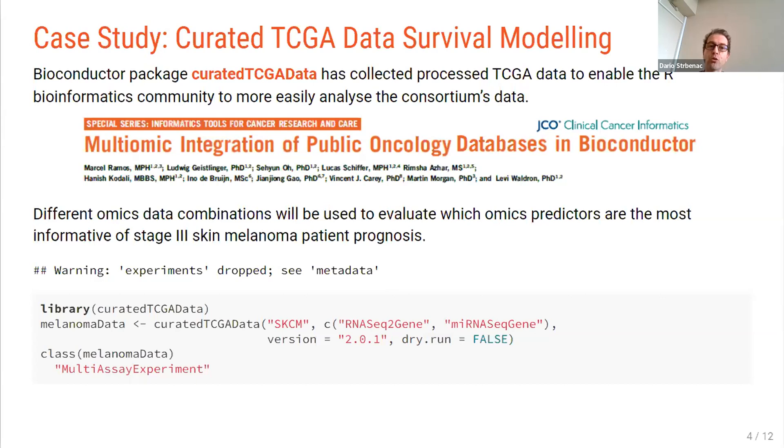So to give you a case study of the new ClassifyR, we're going to apply it to some data from curated TCGA data. So this Bioconductor package has collected the processed TCGA data to help enable the bioinformatics community to more easily analyze this consortium's data. And they published their work in JCO Clinical Cancer Informatics. So we're going to use two different omics technologies to find out which omics predictors are most informative of stage three skin melanoma patient prognosis. So first, what we do is we load the data into R using the curated TCGA data function. And that produces a multi assay experiment for us.